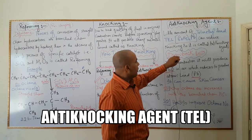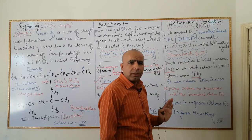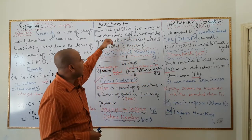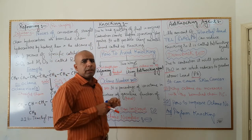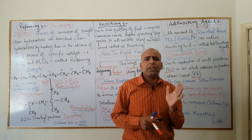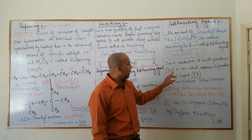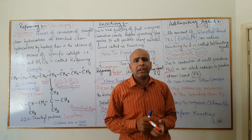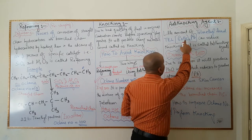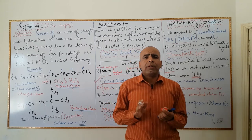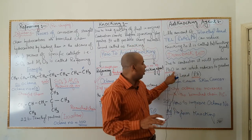Adding tetra ethyl lead reduces knocking — the sharp metallic sound — and the engine combusts fuel smoothly. However, there is a serious disadvantage. Due to the combustion of tetra ethyl lead in petrol, lead is produced, which combines with oxygen to produce lead monoxide (PbO).